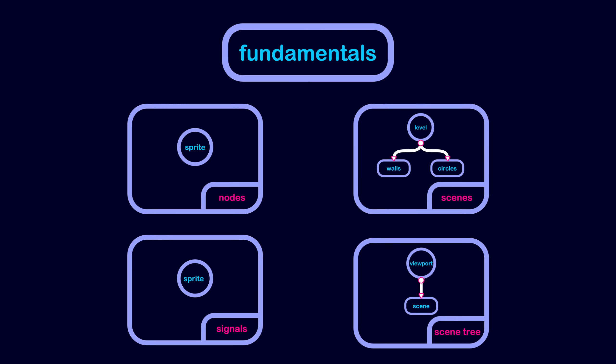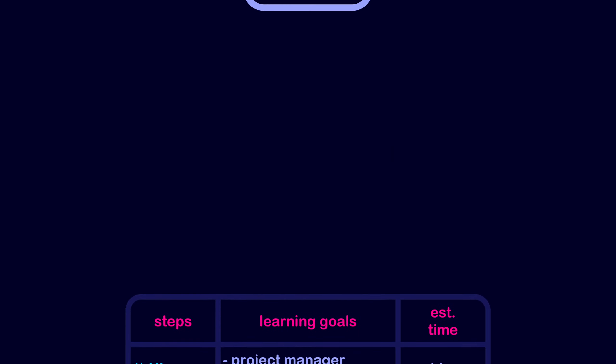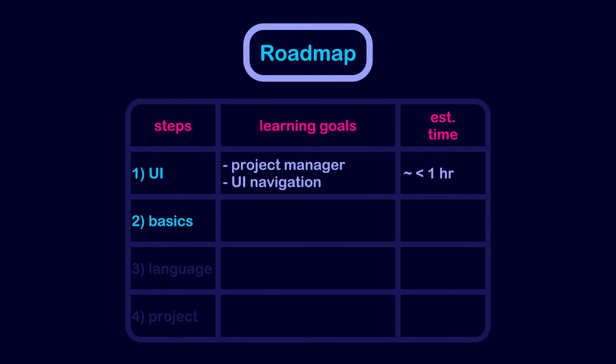I'm also working on a video that explains these concepts and it should be released soon. By the end of this step, you should know what scenes, nodes, signals, and the scene tree are. You should also know what instantiation is and that nodes can inherit the properties of other nodes. This step could take you anywhere from 1 to 2 days or even more to be comfortable with these concepts.